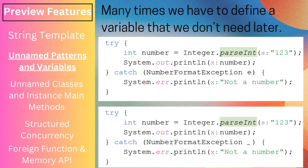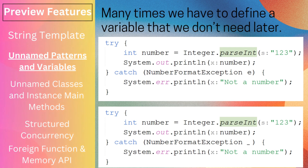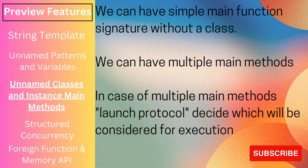Next is unnamed patterns and variables. Many times we have to define a variable that we don't need later — for example, a variable e in a catch block that we never use. In Java 21, we no longer have to name such variables; we can use underscore _ instead, as has been done in other languages for a long time. This can also be applied in record pattern matching wherever an unused variable can be replaced with an underscore.